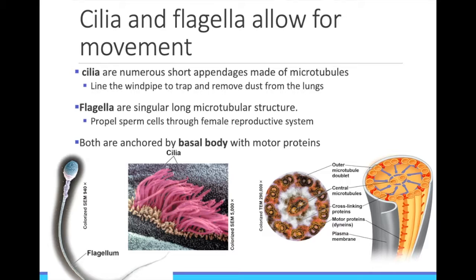Cilia in humans don't typically move an entire cell around. Instead, the cells are stationary, but the cilia move, and they move particles or fluids across them. You have ciliated cells in your trachea, the tube that leads to your lungs. They beat over and over again to move mucus and particles up and away from your lungs, helping to keep your lungs clear.